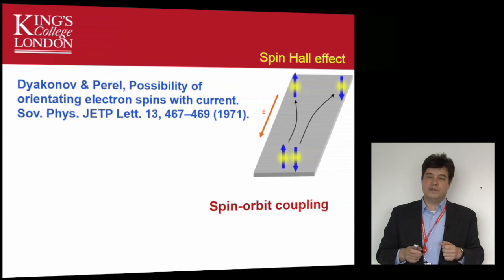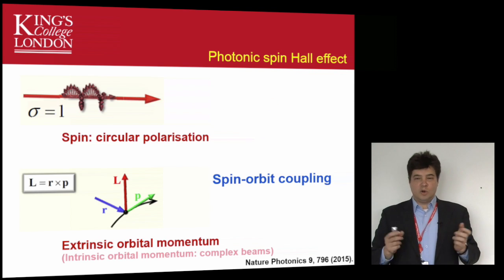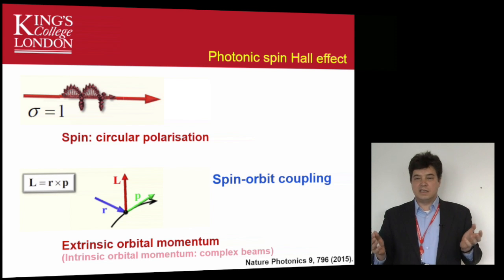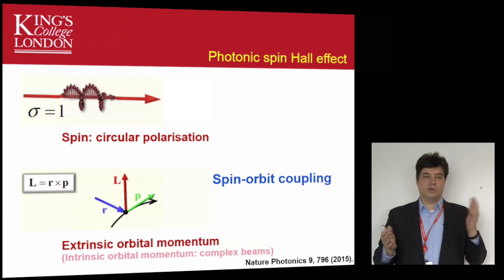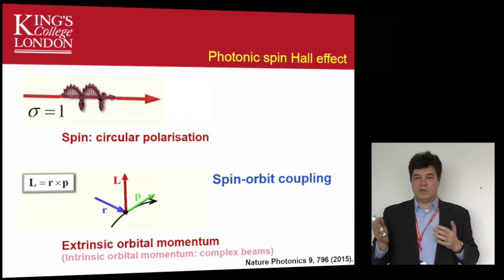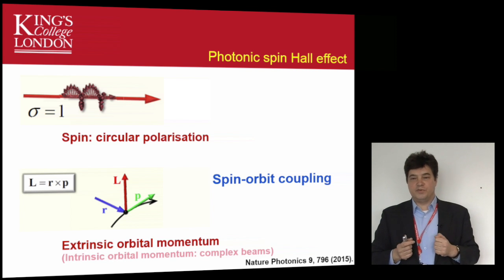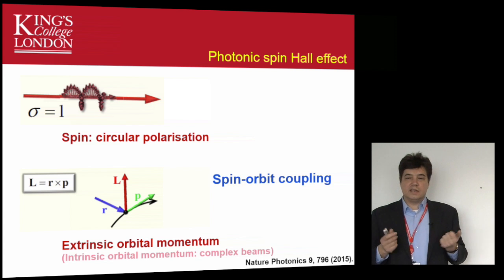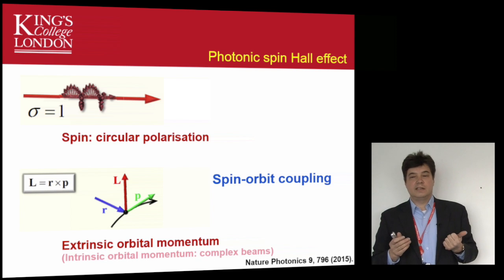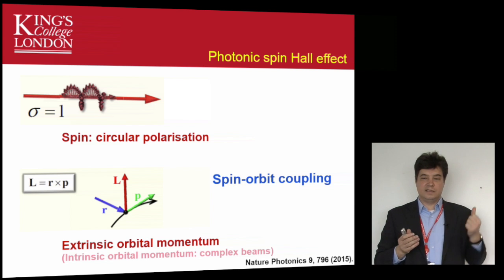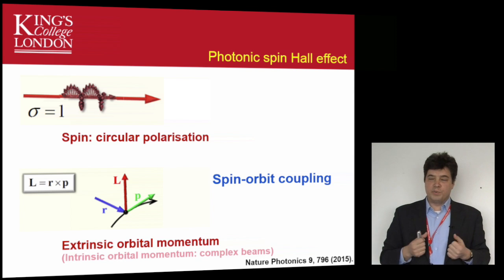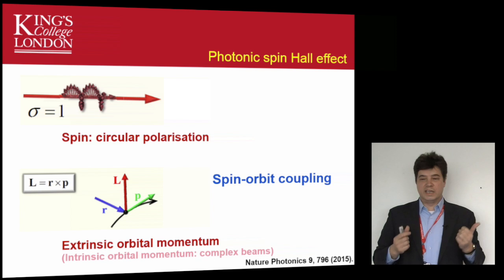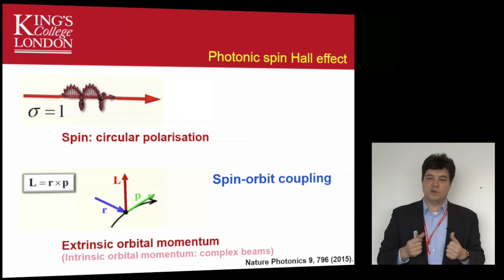So can this spin Hall effect be present in optics? In optics we know that spin can be associated with circular polarization of light - it can be left circular polarization or right circular polarization, determined by different orientations of the photon spin. Similarly, orbital momentum can be associated with light just as in conventional mechanics. If you have a center of coordinates and the momentum of your light - the wave vector - associated with this will be the orbital angular momentum of light. This is called the extrinsic orbital momentum.